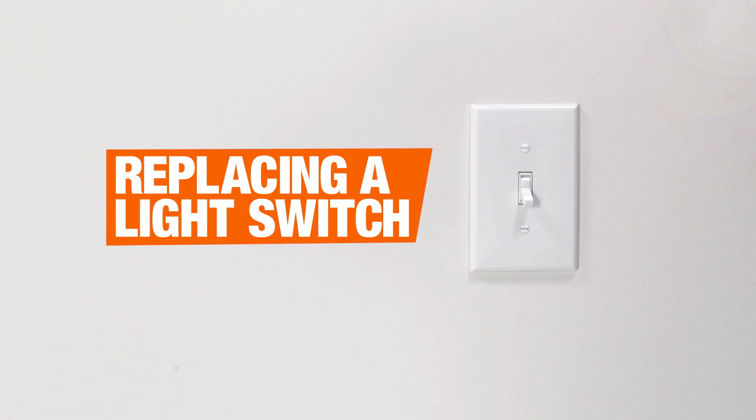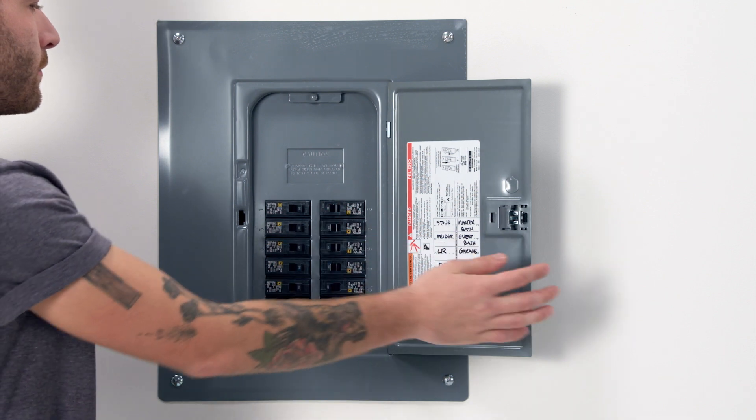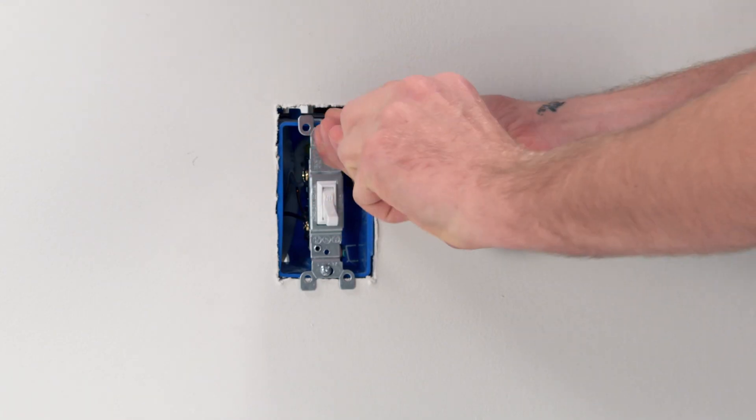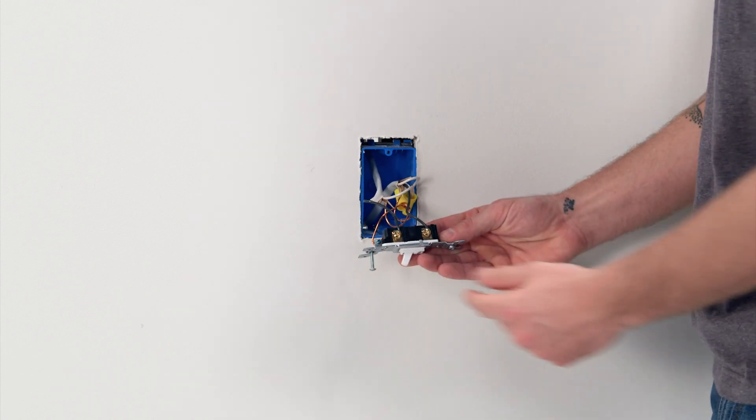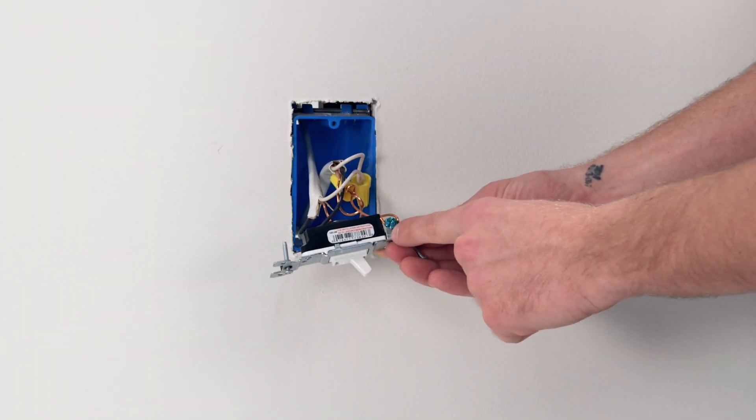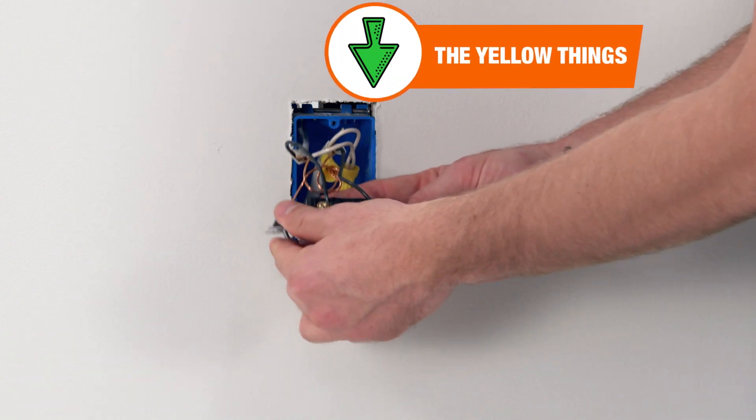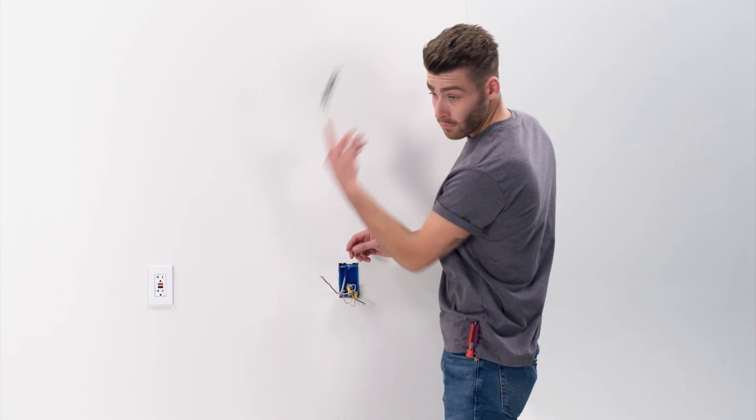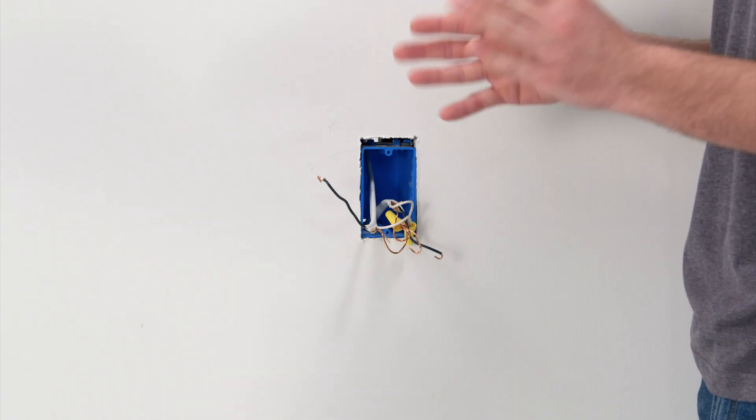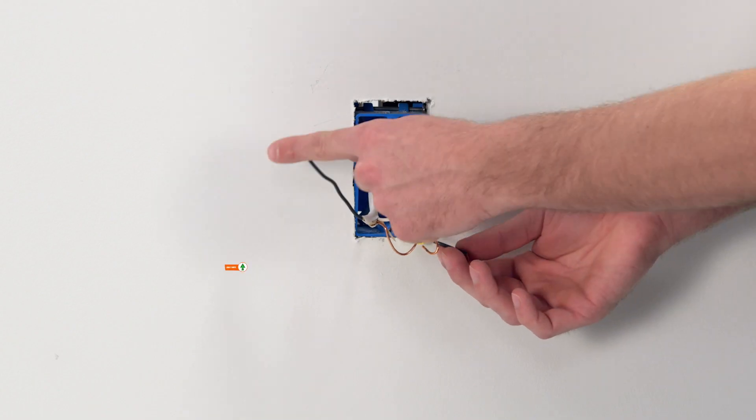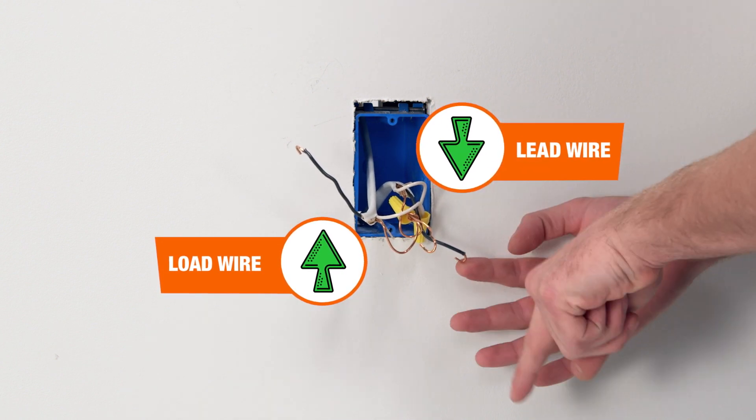Replacing a light switch to a dimmer is pretty much the same process. First, turn off the circuit breaker. And instead of connecting wires to the terminals on the side of your switch, we're going to be connecting matching wires to one another using cap nuts. For reference and to keep track of which is which, I've pointed my load wire up and my lead wire down.